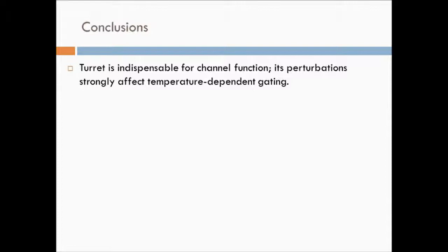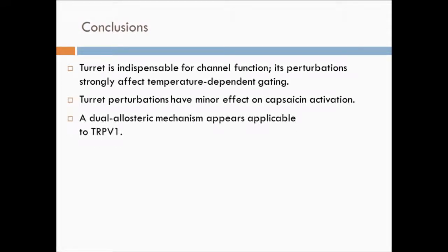In summary, we found that the turret region is indispensable for channel function. Perturbations to the turret structure strongly affected temperature-dependent activation, whereas they had minor effects on capsaicin activation. These findings suggest that a dual allosteric mechanism may underlie the gating of TRPV1 by heat and capsaicin.